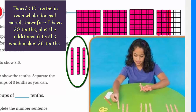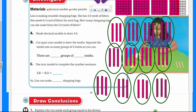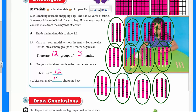Now I'm going to make as many as I can. Here's one more group of three-tenths. I went ahead and made my groups — I was able to make 12 groups of three-tenths. Now it says use your model to complete the number sentence. So three and six-tenths divided by three-tenths equals 12 groups. She can make 12 shopping bags.